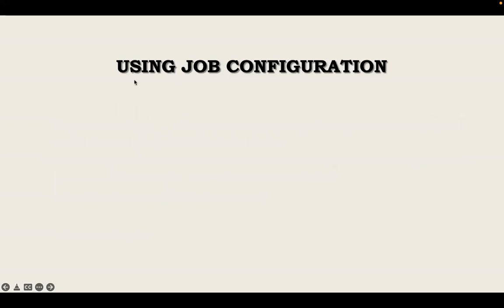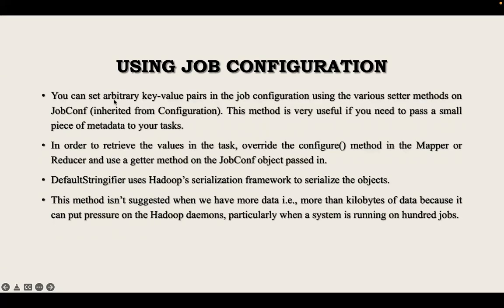The first technique is using job configurations. In job configurations, we set arbitrary key-value pairs by using set methods on the JobConf class, which is inherited from Configuration. This method is very useful if you need to pass a small piece of metadata to your tasks. To retrieve the values in the tasks, overwrite the configure method in the mapper or reducer and use a getter method on the JobConf object that is passed in.